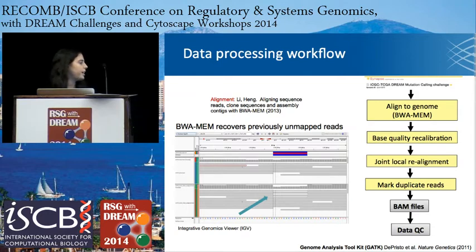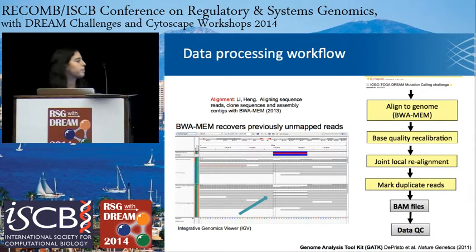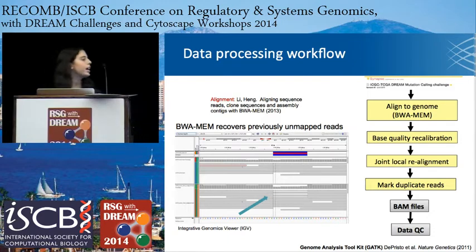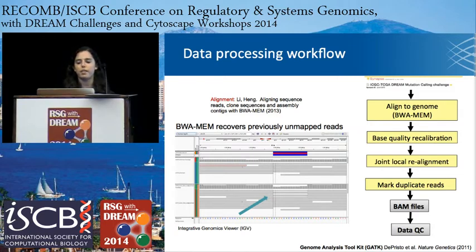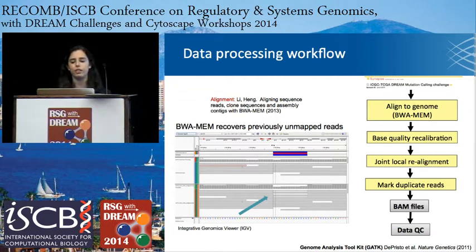This is shown here in the Integrative Genomics Viewer, or IGV, screenshot. The BAM file at the top of the screen was aligned with standard BWA, and the one at the lower half was aligned with BWA MEM. You can see there are about six reads that we are able to recover with this new alignment method, therefore giving us more sensitivity in indel calls. We chose to align all our data with this method, even though we are calling point mutations here.